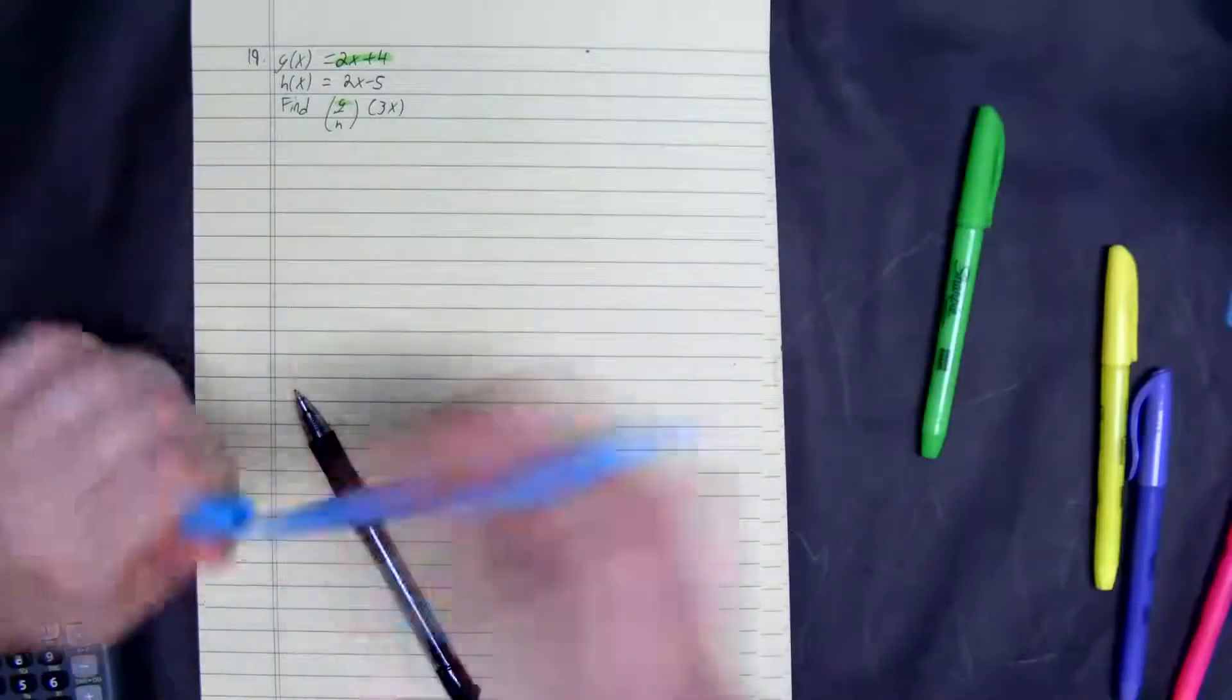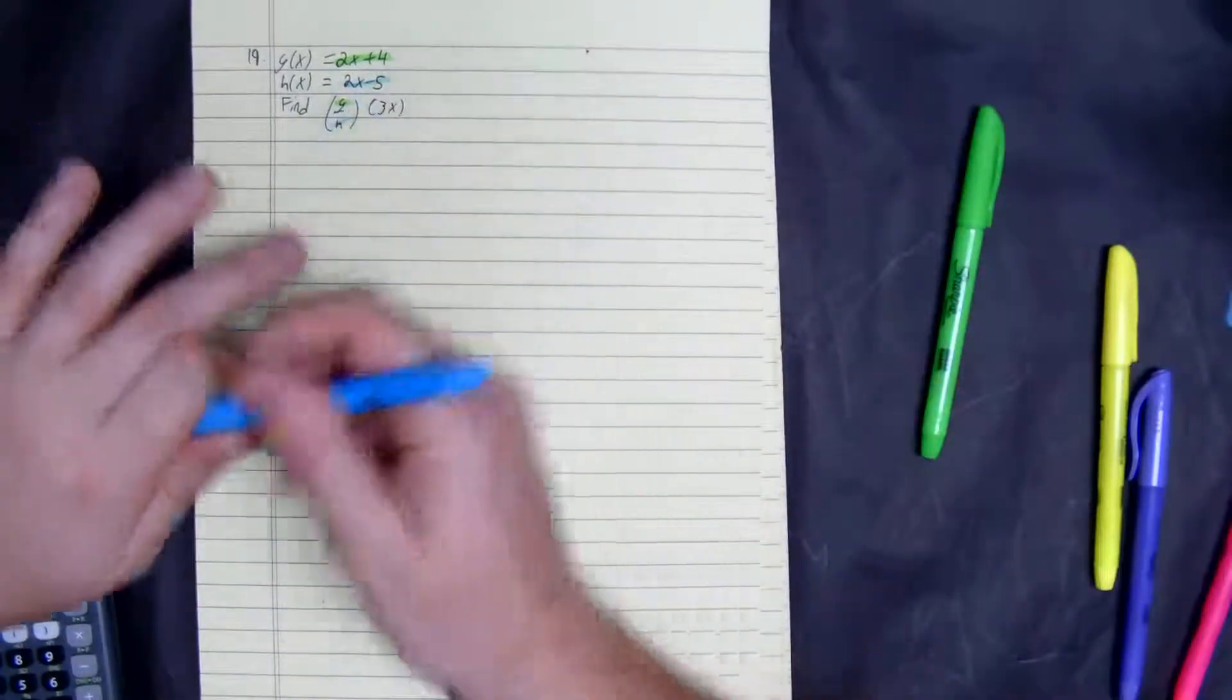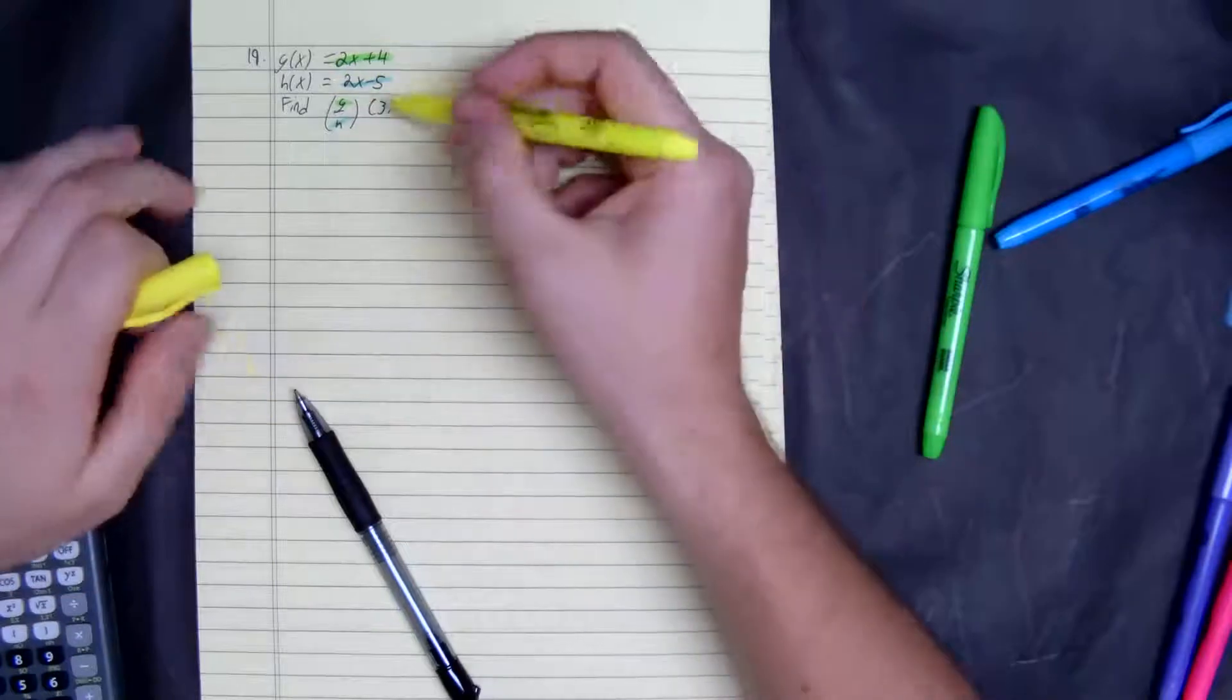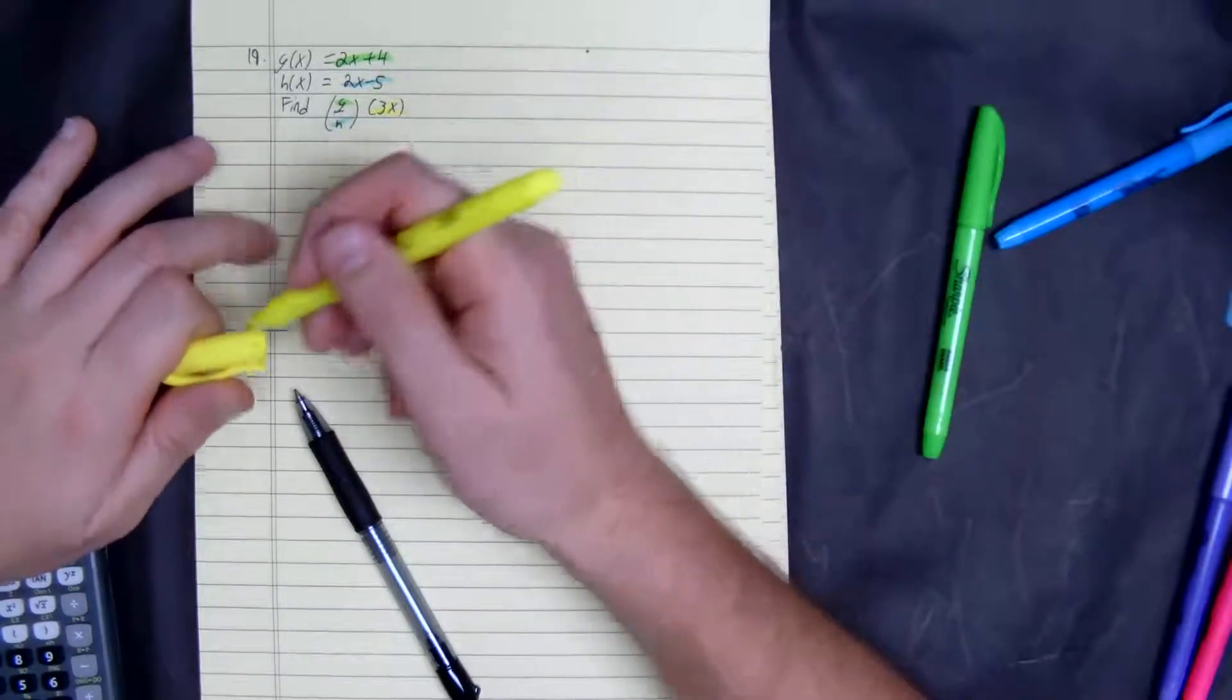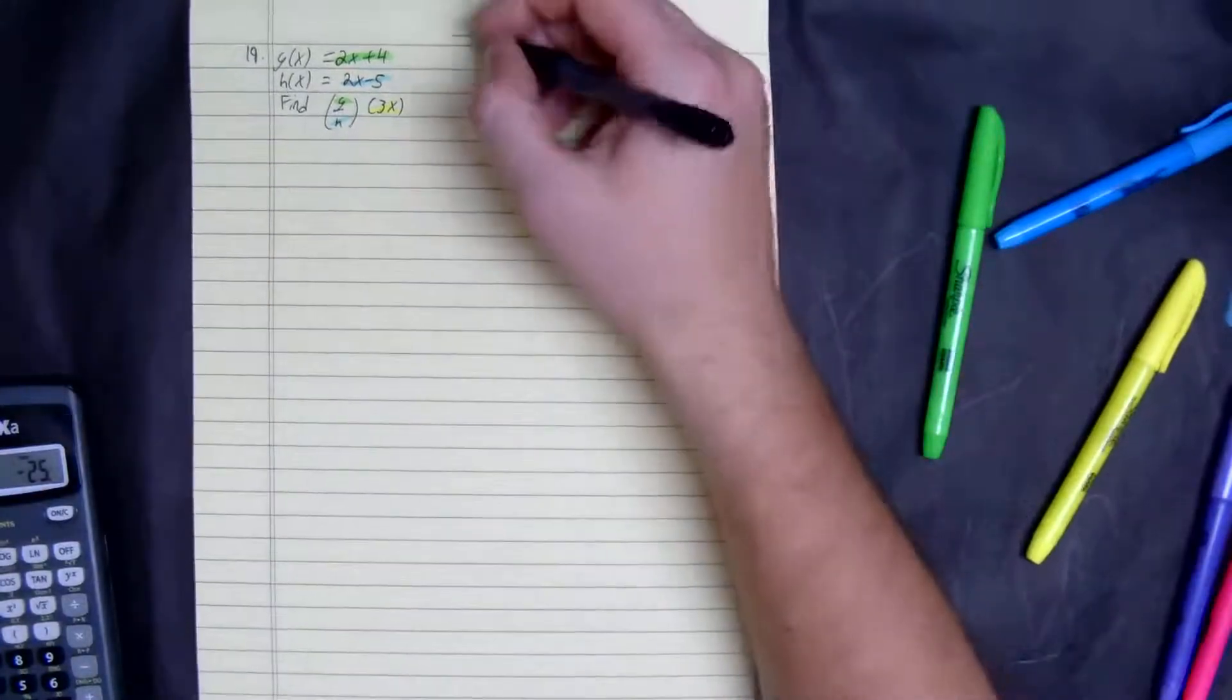That's where g is, h is right there. We're going to plug in 3x once we get that done. I don't think there's any simplifying, so what we do here: